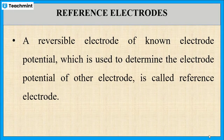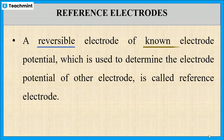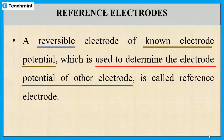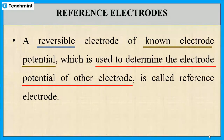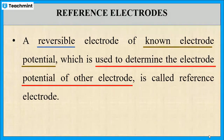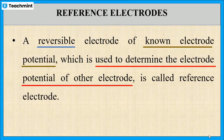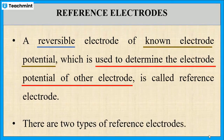While defining reference electrode, we must include three things: one, it is a reversible electrode; two, it has a known electrode potential; and three, it is used to determine the electrode potential of the other electrode. So, a reference electrode is a reversible electrode of known electrode potential which is used to determine the electrode potential of the unknown electrode.